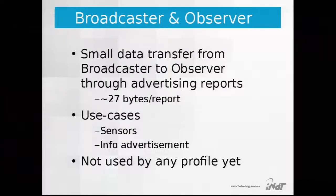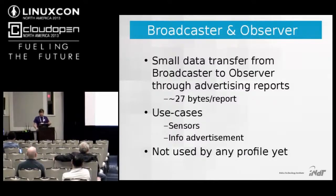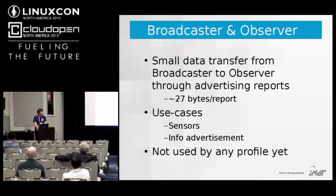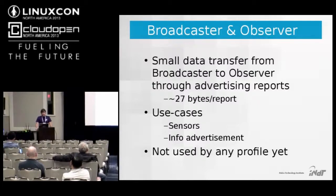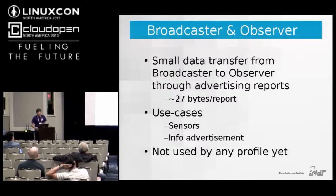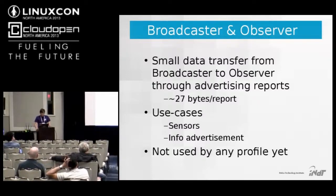The broadcaster and observer roles are mainly used for connectionless undirected data transfers. Transfers are limited to about 27 bytes per advertising report. Currently no profile is defined by the Bluetooth SIG for this, so it's mainly used for manufacturer-specific use cases — such as a room temperature sensor advertising its reading, or transportation hubs and shopping malls advertising discounts.